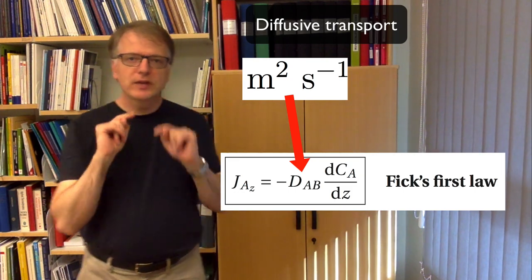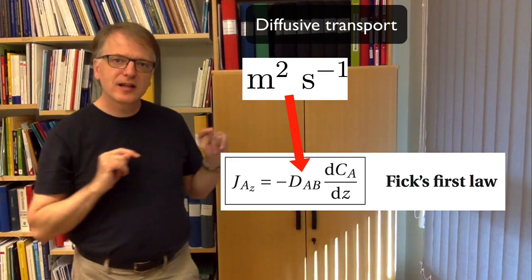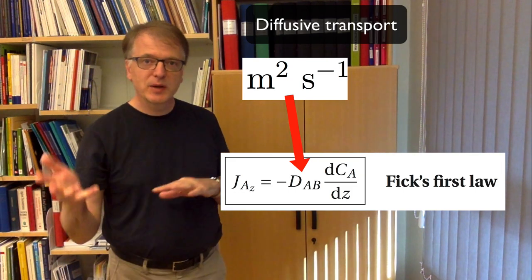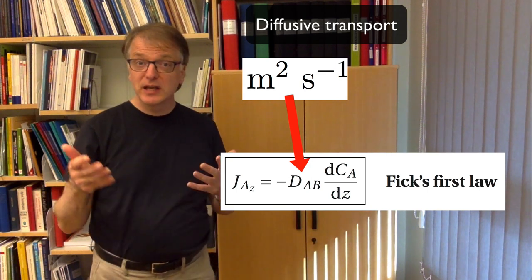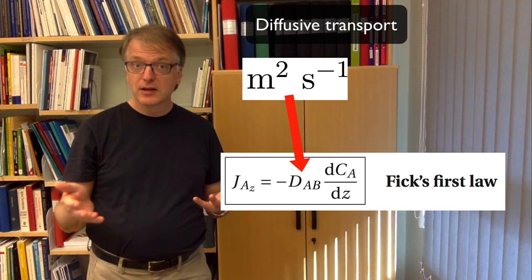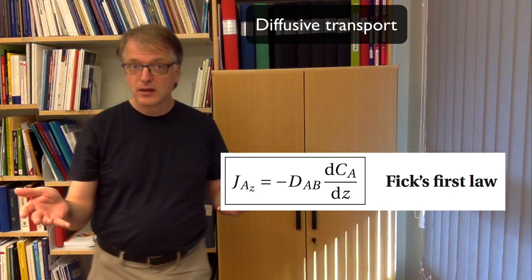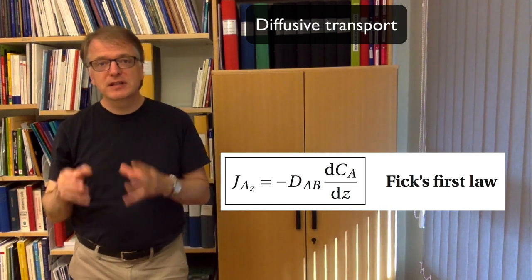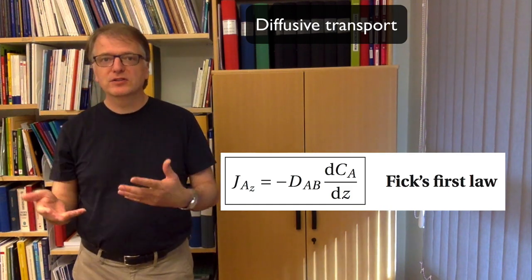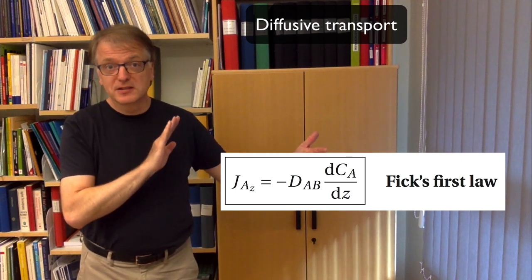But if you take the diffusivity and divide that by the distance, so square meter per second divided by a meter, then you get meter per second, a velocity. So the diffusivity says something about how fast things are going if you know the distance.